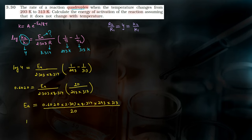Calculate करने के बाद आएगा: Ea equals to 52.864 kJ per mole. This is the answer for this question. Activation energy find out करनी थी, हमने कर दी। आज हमारा यह chapter finally complete हो गया। Next chapter के साथ मिलेंगे — तब तक अच्छे से पढ़ते रहें, खूब सारी practice करते रहें। Bye bye!